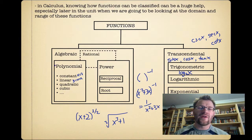And something that can be considered either a polynomial or a power function is a rational function. So a rational function is just made up of 1 or 2 polynomials.